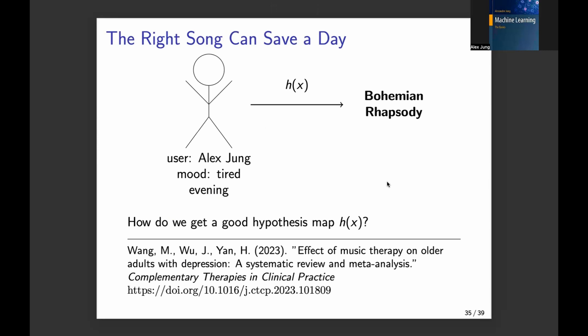For example, in Finland in November, it's very dark here and people are very tired. It's very tough, but sometimes a good song can really lift up the mood. And here, this is a machine learning problem.